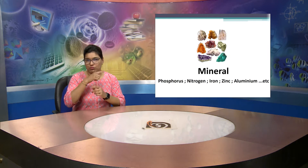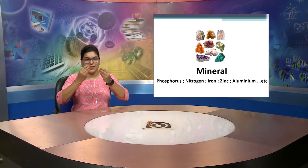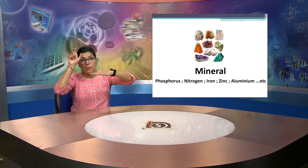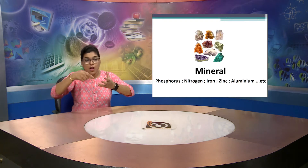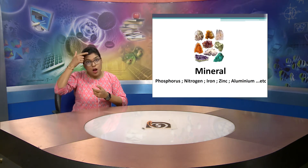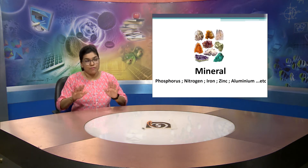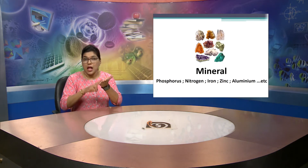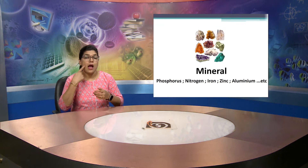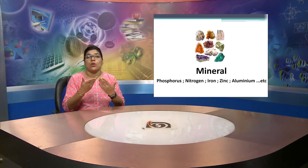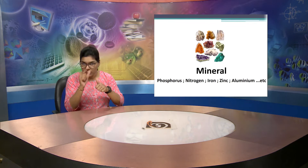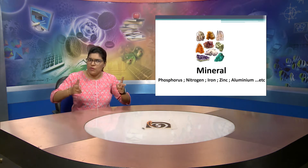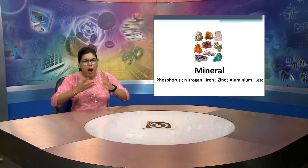The next word is mineral. Minerals are found in different layers of the earth. There are different kinds of minerals which are available. You can see different names written on the screen, like phosphorus, nitrogen, iron, zinc, and aluminium. So there are very many different kinds of minerals available on earth.